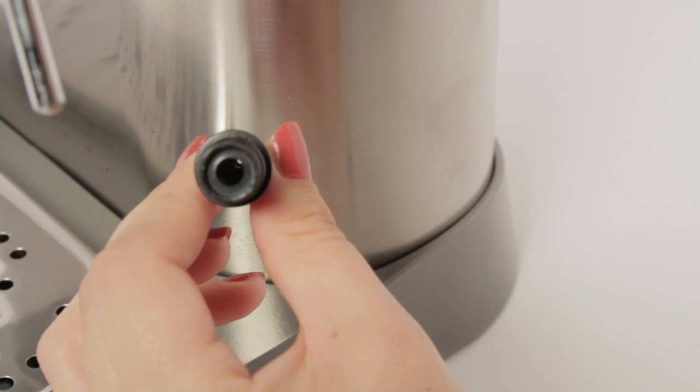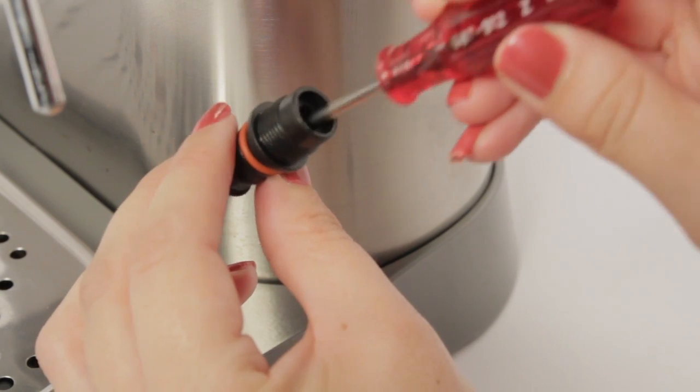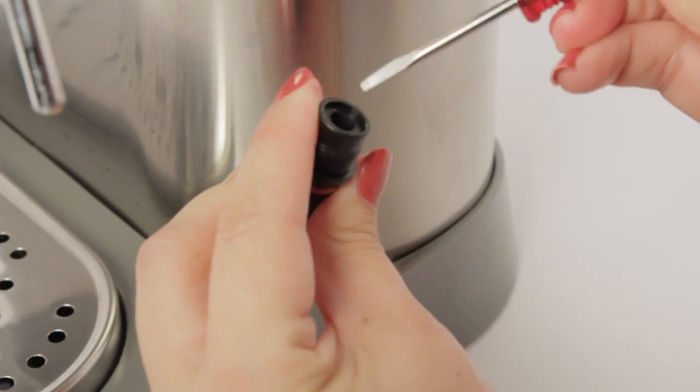The large rubber gasket will usually remain inside the wand when it is removed. This can be removed with tweezers or wedged out with a small screwdriver.